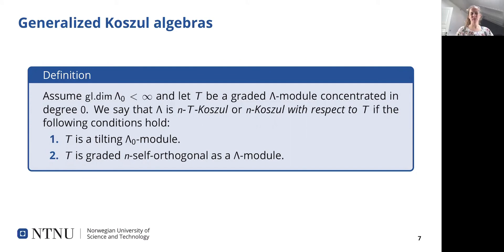Using this, we define our higher Cazool algebras. The degree zero part of our algebra has finite global dimension, and we say that our algebra is n-Cazool with respect to T if T is a tilting module over lambda-zero and T satisfies this extra vanishing condition. Two things to note: first, a classical Cazool algebra with T equal to the degree zero part and n equal to 1 clearly satisfies this definition. Second, in the case n equal to 1, this is exactly the same definition that Dag-Oskar Matsen uses in his paper mentioned at the start of this talk.